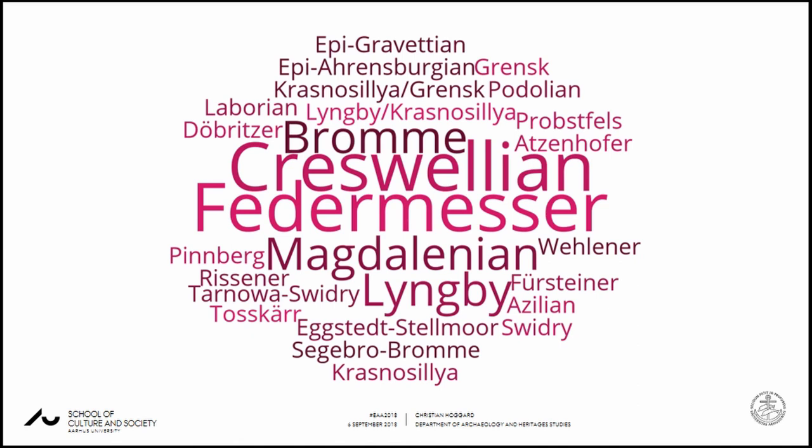The Federmesser, for example, can be a term for a multi-unit structure akin to a technocomplex, a unit based on the presence of a Federmesser point, and is often used interchangeably with the Azilian. In the ATU system, terms like 'Tanged Point Technocomplex' or the 'Atzenhofer' do not fit or scale appropriately. While the Federmesser can be scaled down to its constituent parts, where should we fit terms like the Creswellian? This is where we really need to redevelop the ATU system to provide that objective framework which retains scale but begins to deconstruct these middling groups.